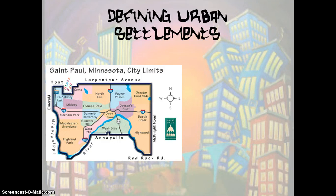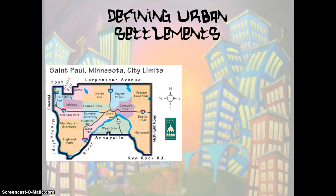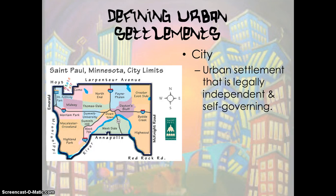First of all, we need to define urban settlements. Here we have a map showing the city limits of St. Paul, Minnesota. St. Paul is bordered by several other cities; it is an urban area broken up into several neighborhoods. We define a city as an urban settlement that is legally independent and self-governing. In the United States, a city surrounded by suburbs is sometimes called a central city. A city has locally elected officials, the ability to raise taxes, and the responsibility for providing essential services. The boundaries of the city define the geographic area within which the local government has legal authority.